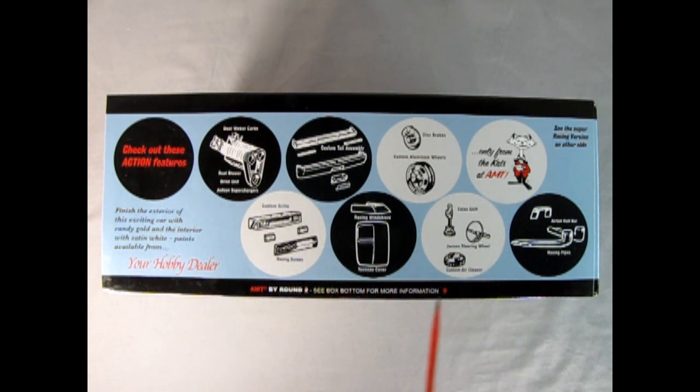Elko shift, Janssen steering wheel, custom air cleaner, airflow roll bar, racing pipes. Only from the cats at AMT. See the super racing version on other side of box. Finish the exterior of this exciting car with candy gold and the interior with satin white. Paints available from your hobby dealer.